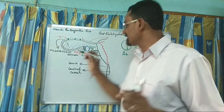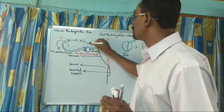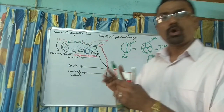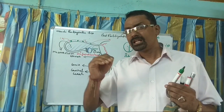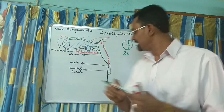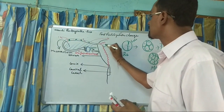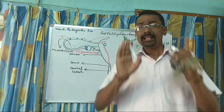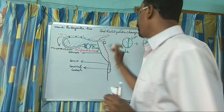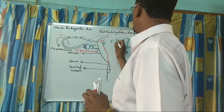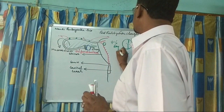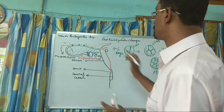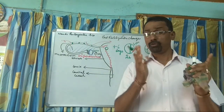Gradually, the Morula — or the developing embryo — reaches the uterus, and it takes around 4 to 6 days to reach the uterus.